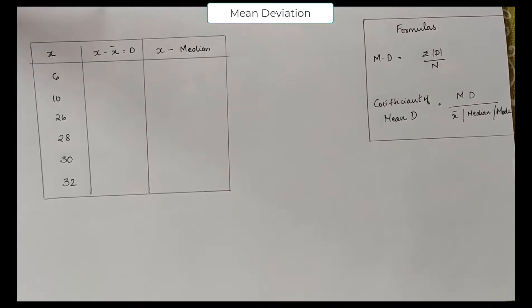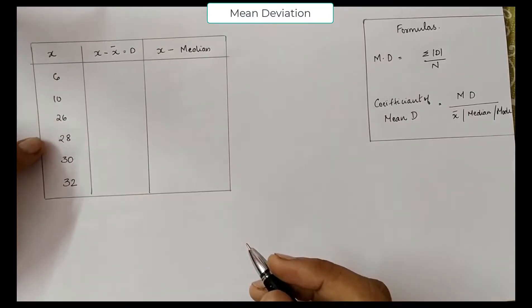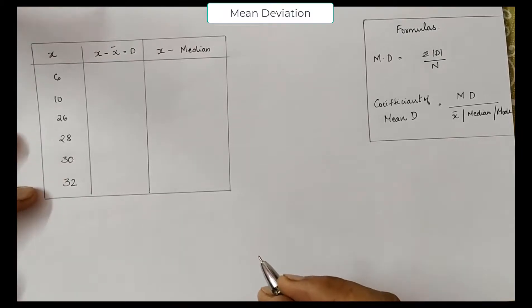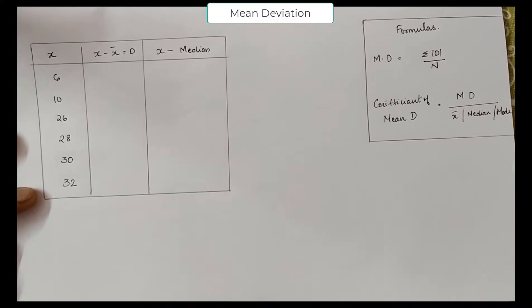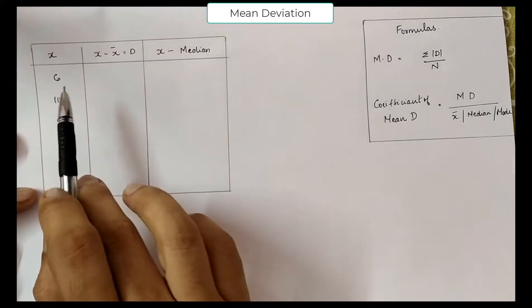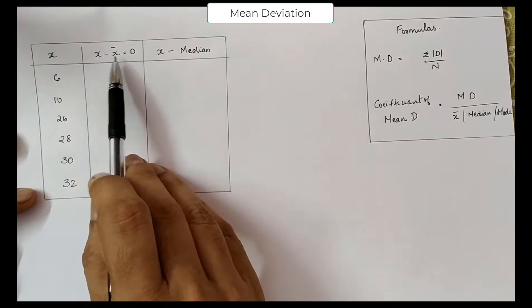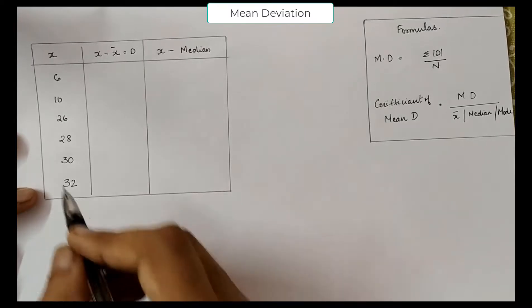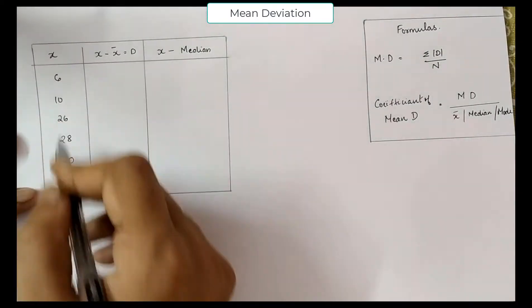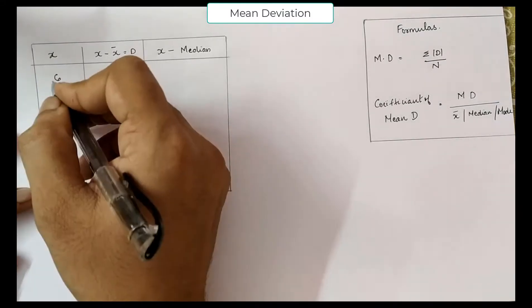Now look at this data set. You have X as 6, 10, 26, 28, 30, 32. This is called individual series — there is no frequency given and there is no class interval. To find mean deviation, you are supposed to find out X minus X̄. To find the mean, you need to calculate X and the total of X.